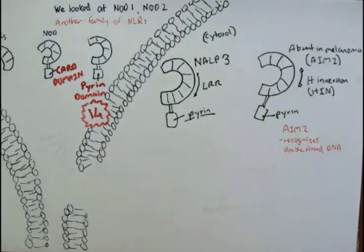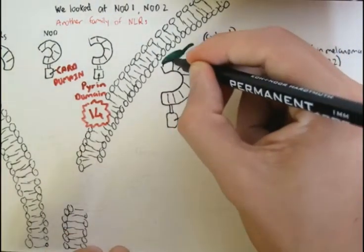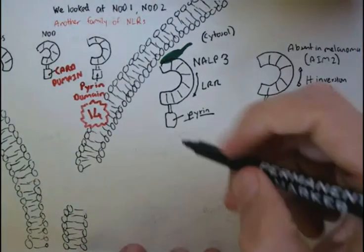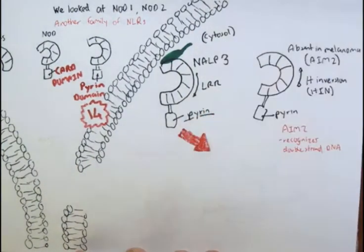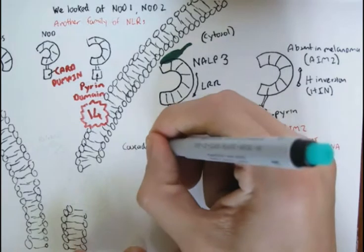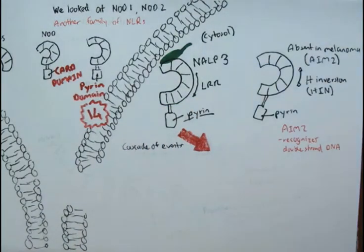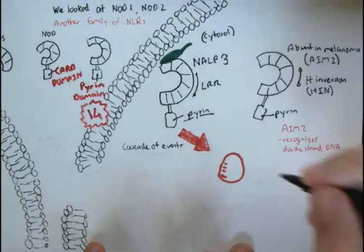Let's look at NALP3 and see how that works. It works differently to the NOD1 and NOD2 NLRs. When it recognizes a pathogen, it initiates a cascade of events, but a different cascade. It activates a protein within the cell called activated caspase-1.